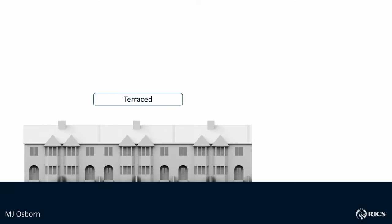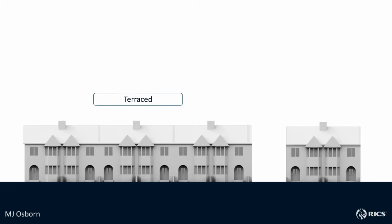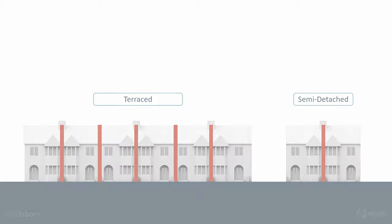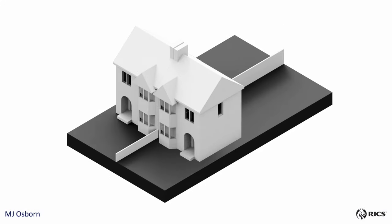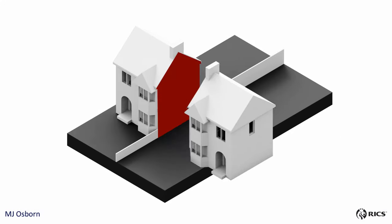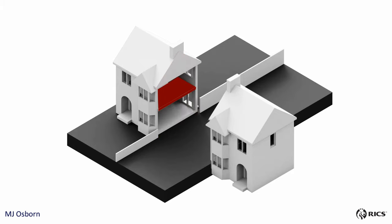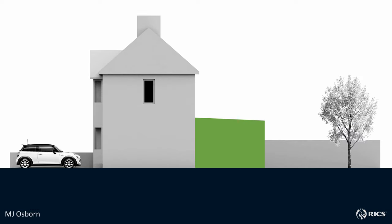If you live in a terraced or semi-detached property, then you will have a party wall. A party wall is a dividing wall separating adjoining properties. It can also be any other structure that is mutually shared between adjoining owners, such as a floor between two apartments.